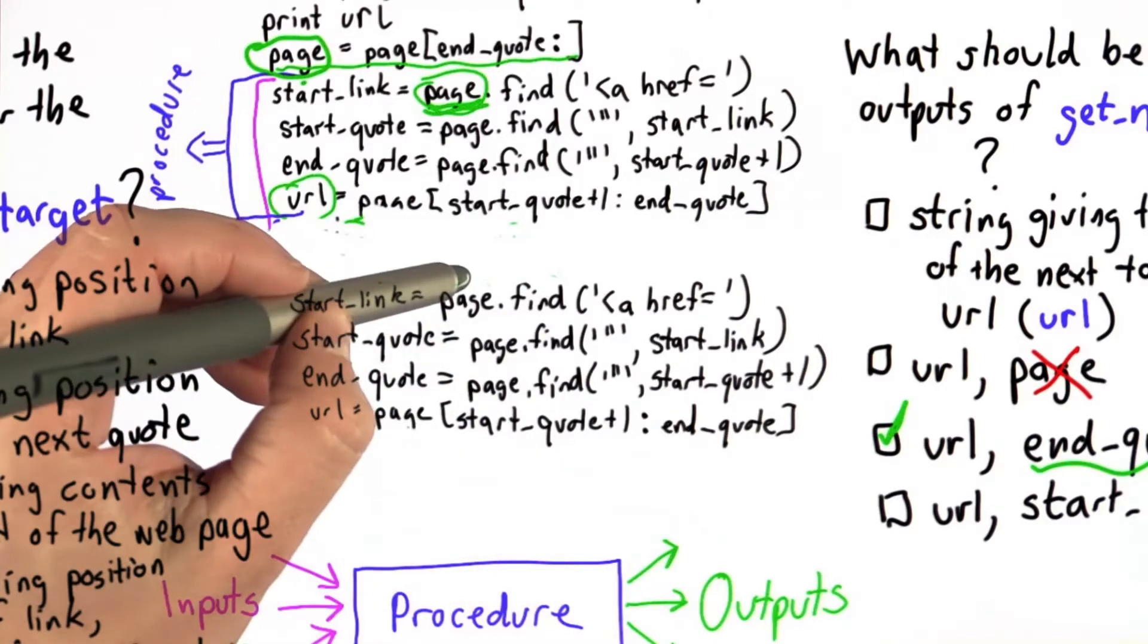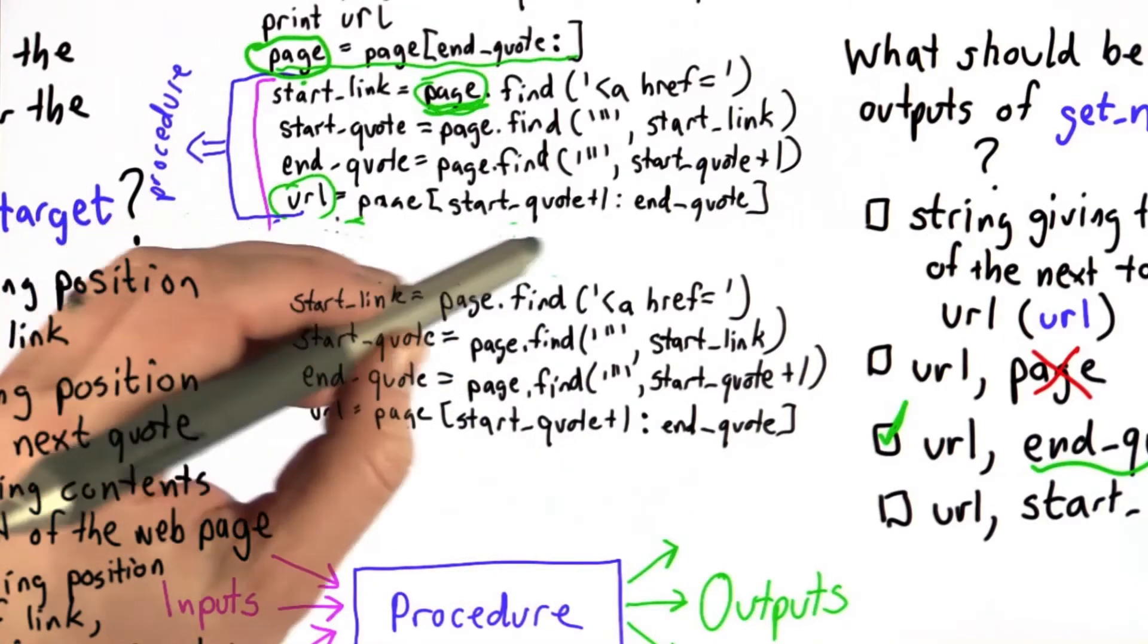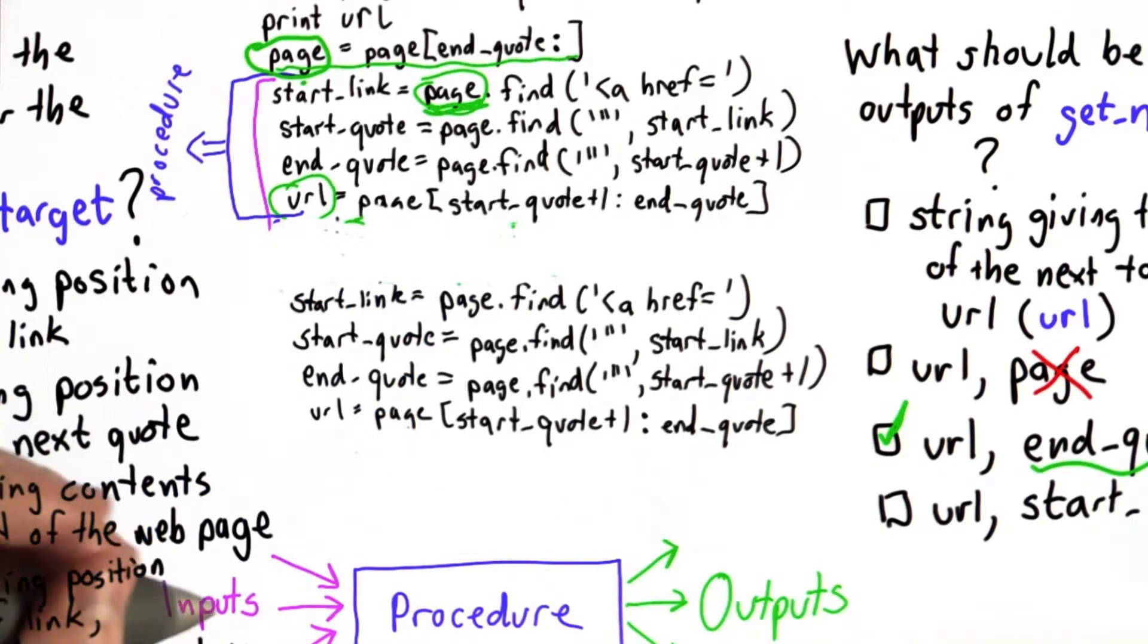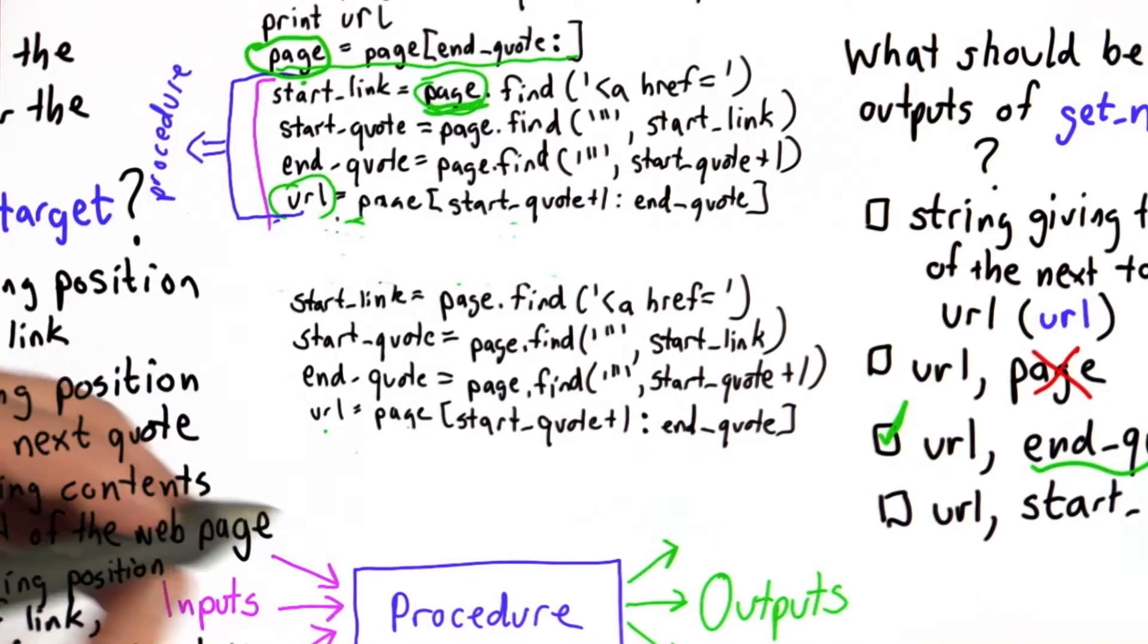So now I haven't modified the code at all. What I have is almost exactly what I need for the body of the procedure. This is what we want to do. What we need to do is modify that to get in the inputs and turn it into a procedure.